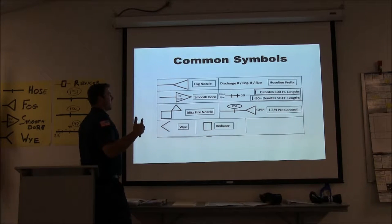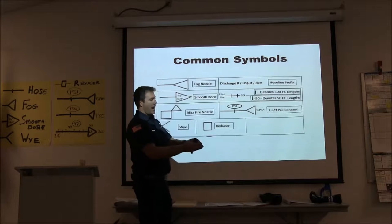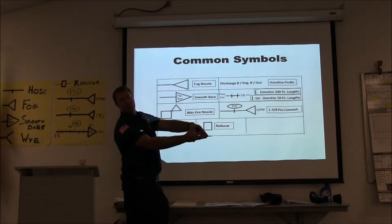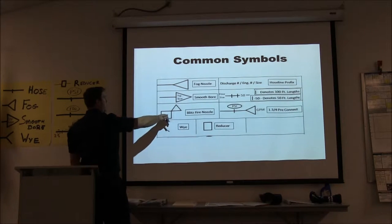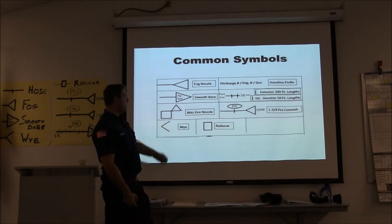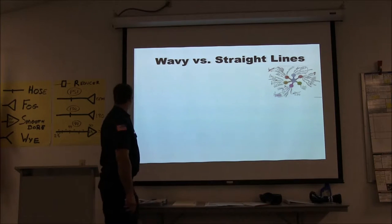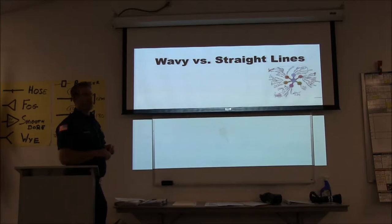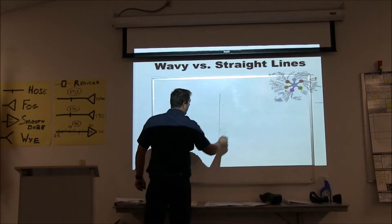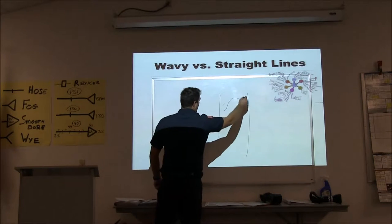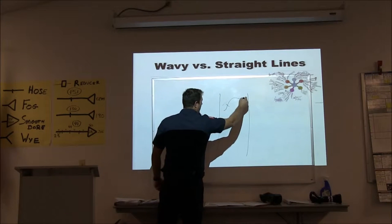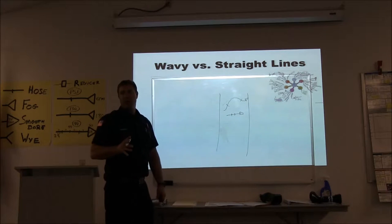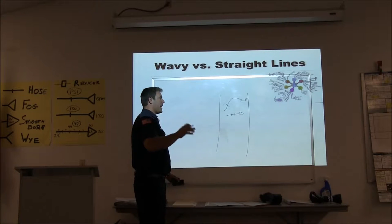The first step in this system is using common symbols. A fog nozzle is a triangle headed out — think of it like a fog nozzle fogging out. A smoothbore is pointed in because it only has a straight stream. We have our blitz fire — a box with a fog nozzle. A Y is just a V; a reducer is just a box. We want to get away from squiggly lines. We have very limited real estate on our pump panel door.